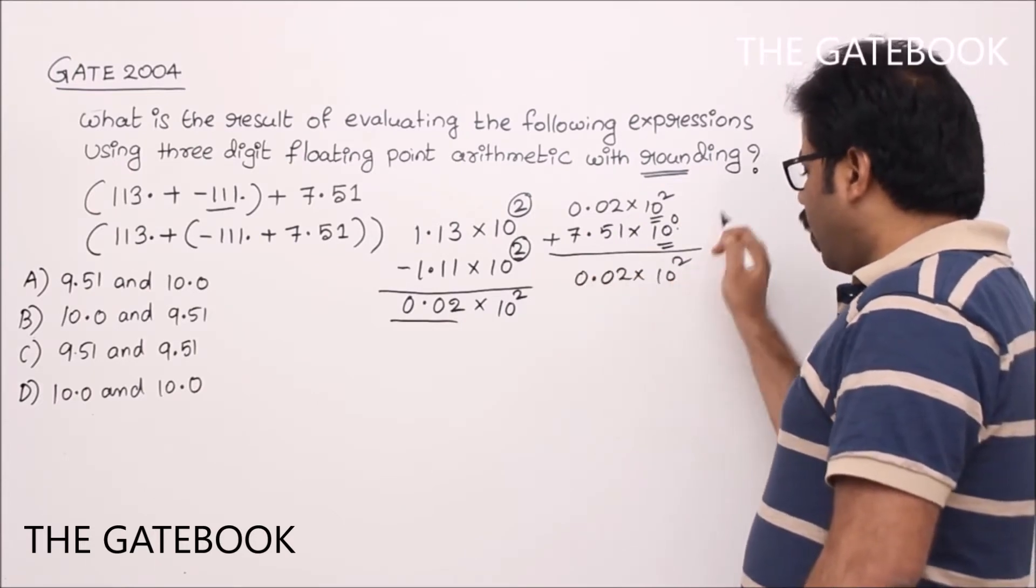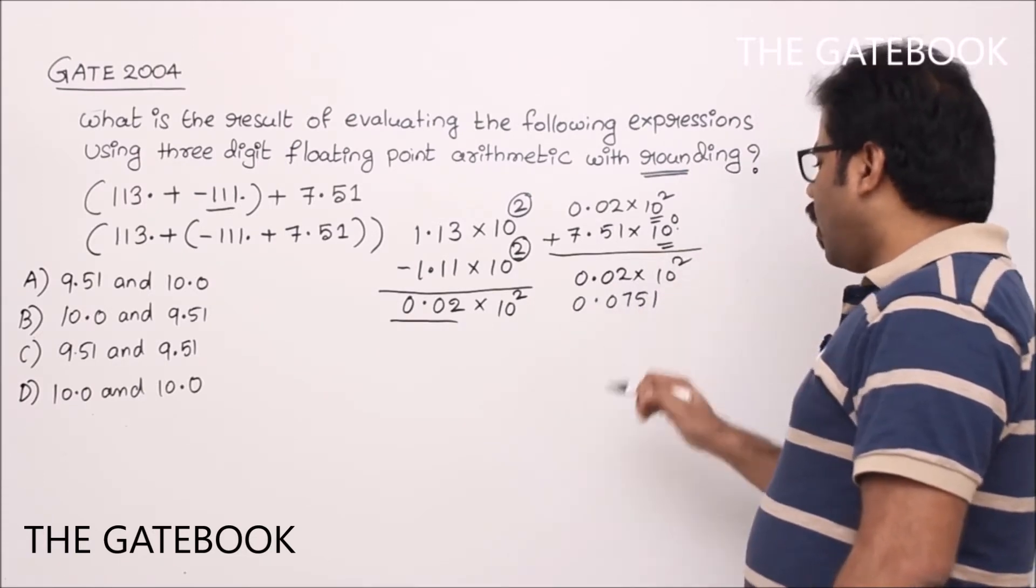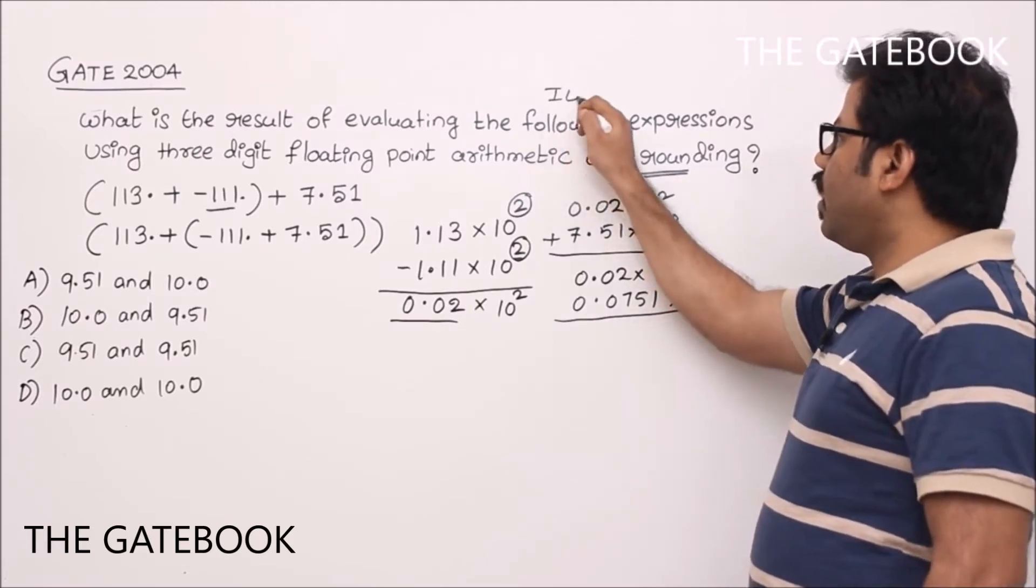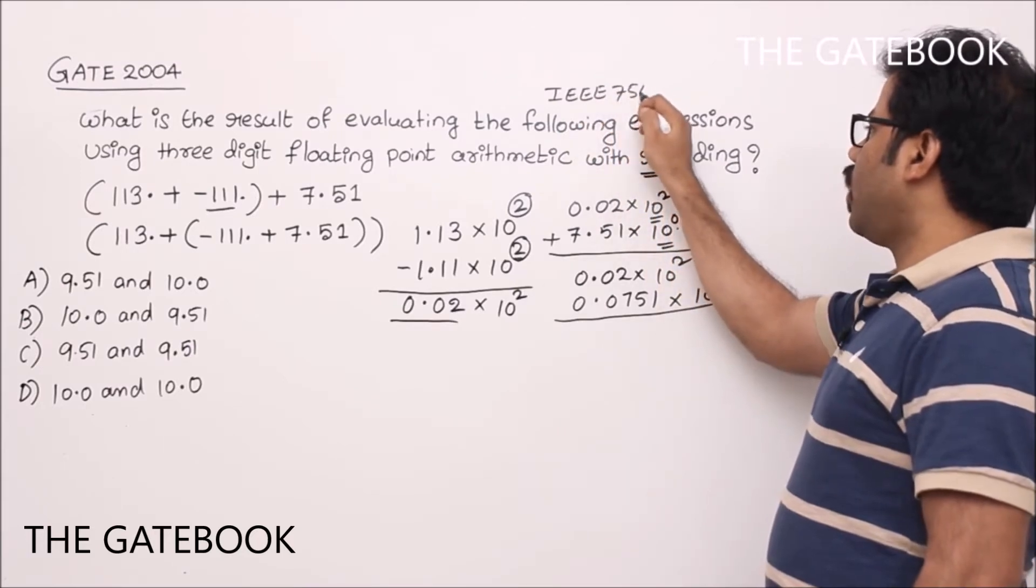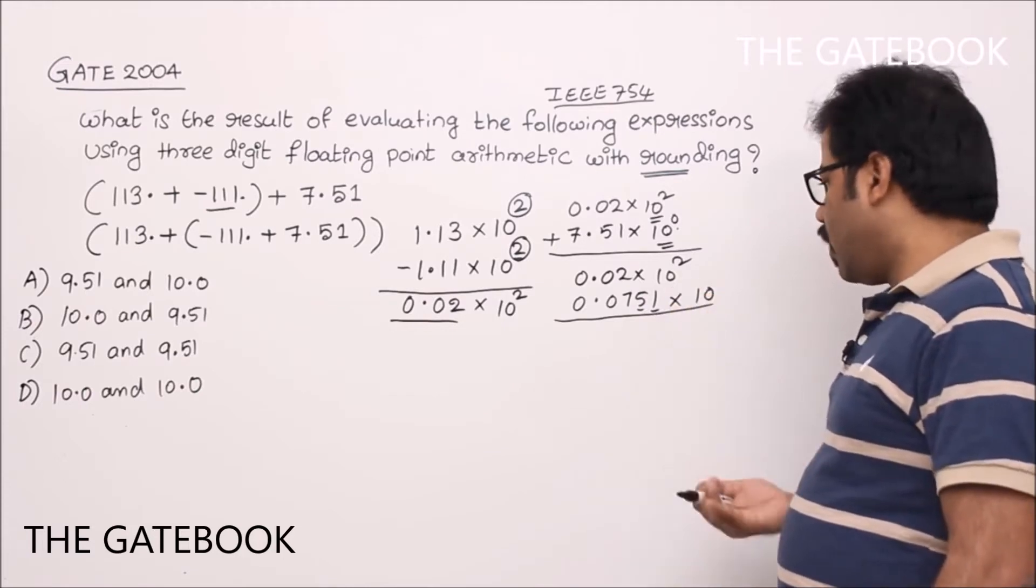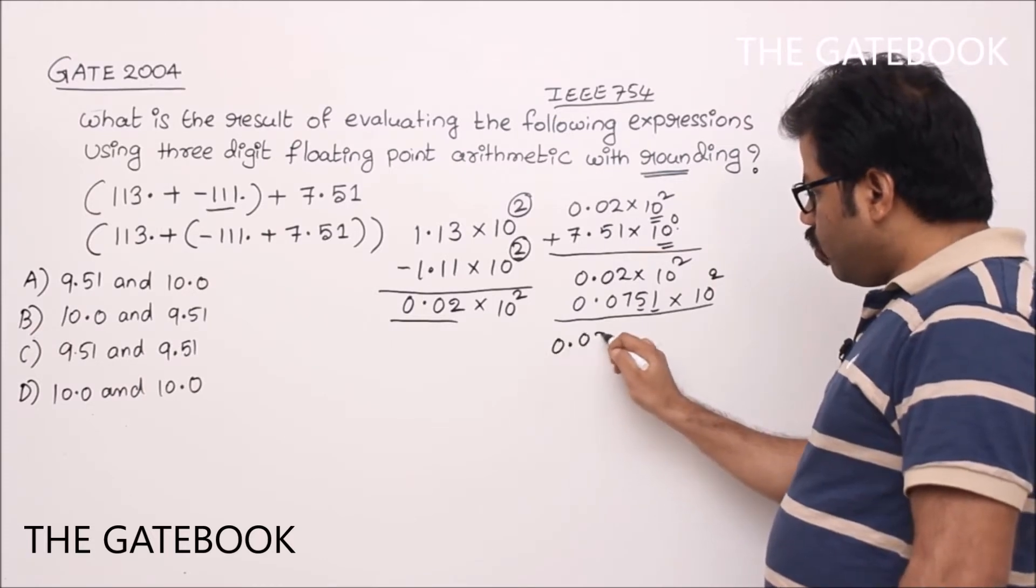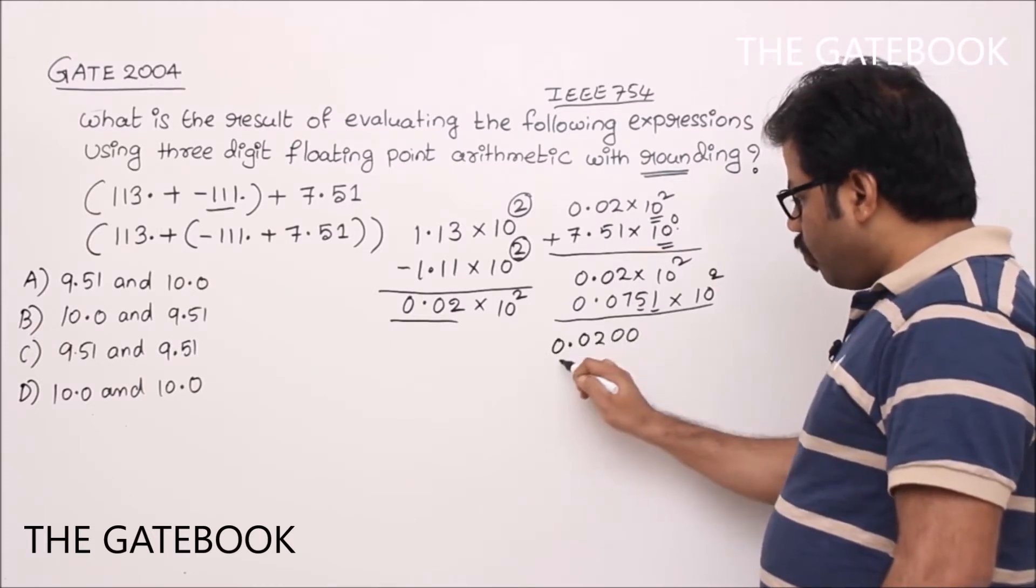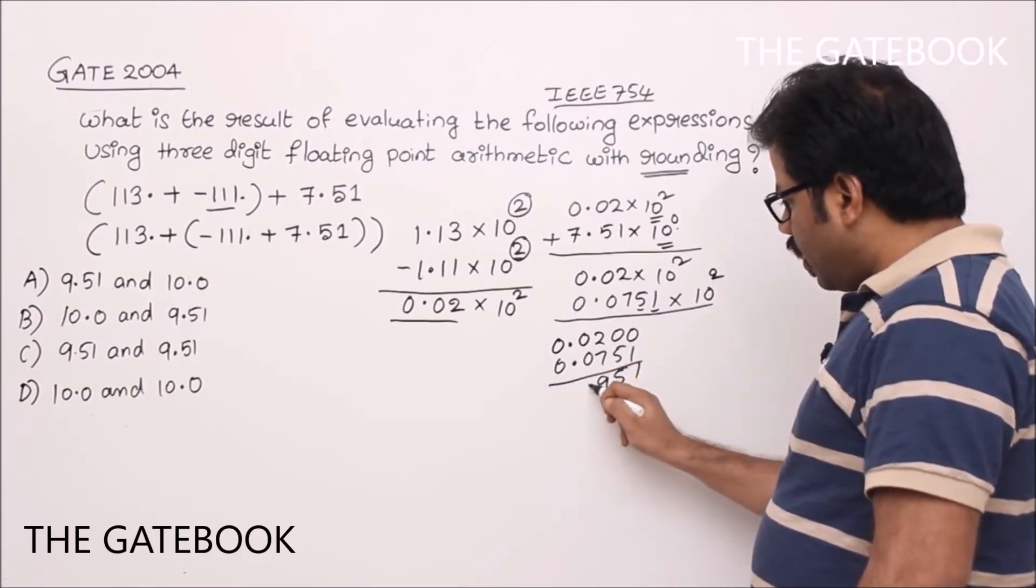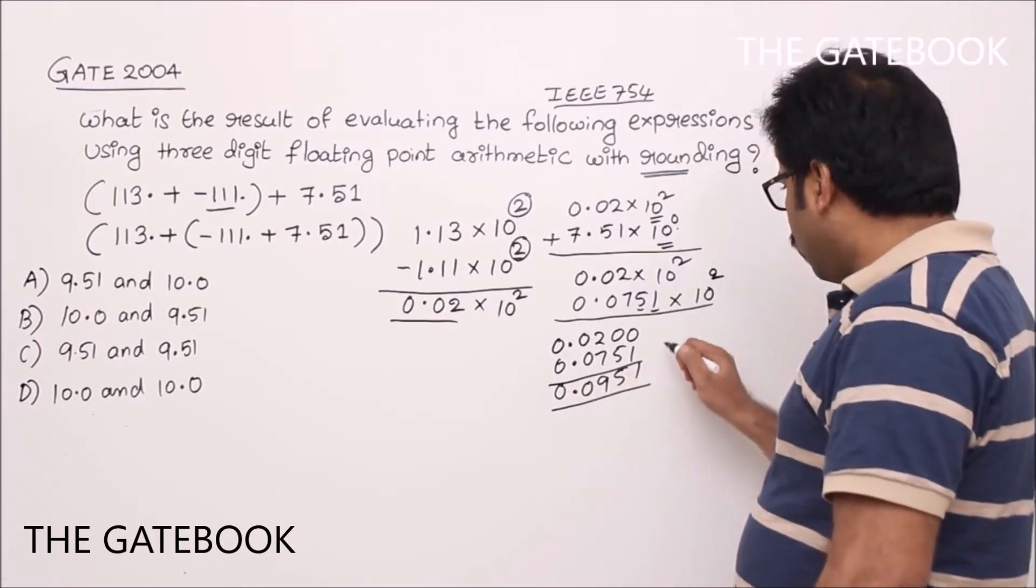0.02 into 10 square. Now we got exponent. 0.0751. I am assuming that I have enough number of guard digits. So even if you assume that it is IEEE problem, that means the question is about IEEE 754 format, still two guard digits we have. That means we are not losing any information. So let us do the simplification. 0.0200 plus 0.0751 equals 0.0951 into 10 square.